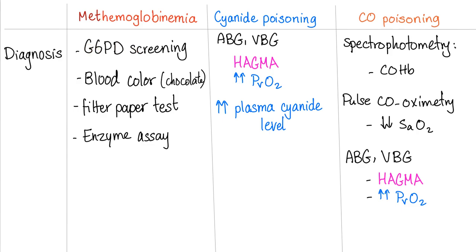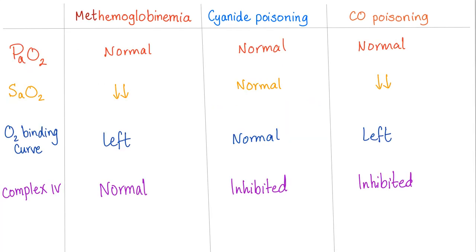How to diagnose these diseases: For methemoglobinemia — start by ruling out G6PD deficiency. The blood color is dark or chocolate-colored. Use the filter paper test and the enzyme assay for NADPH-dependent cytochrome B5 methemoglobin reductase. For cyanide poisoning — arterial blood gas (ABG) to diagnose high anion gap metabolic acidosis; venous blood gas (VBG) to diagnose elevated PvO2; and increased plasma cyanide level by definition. For CO poisoning — spectrophotometry detects carboxyhemoglobin; pulse CO-oximetry detects decreased oxygen saturation. Use pulse CO-oximetry, not standard pulse oximetry. ABG and VBG for HAGMA and elevated PvO2.